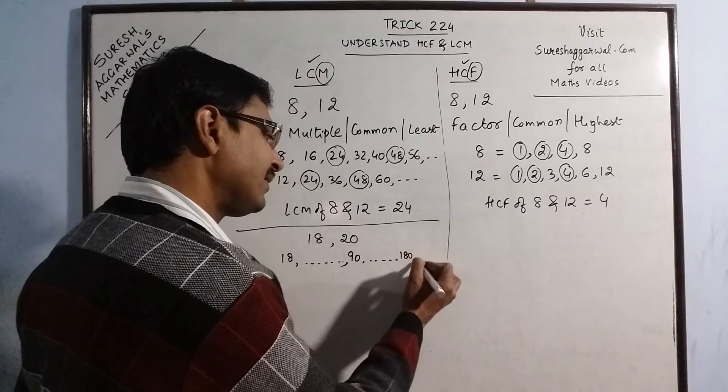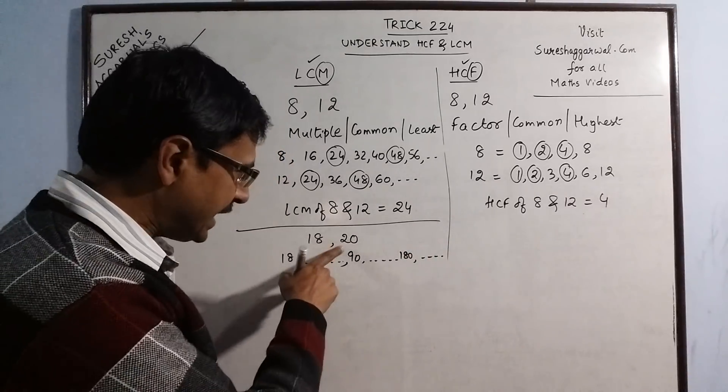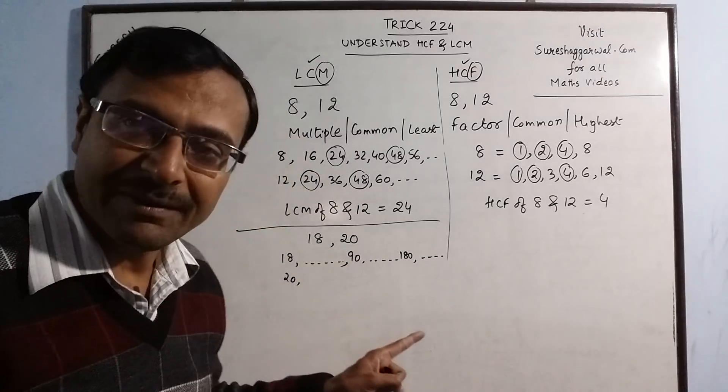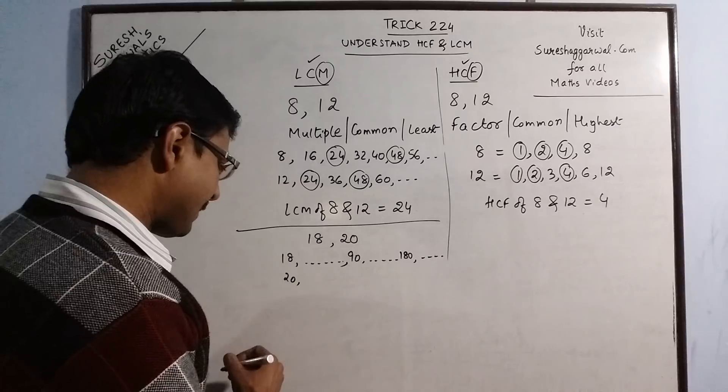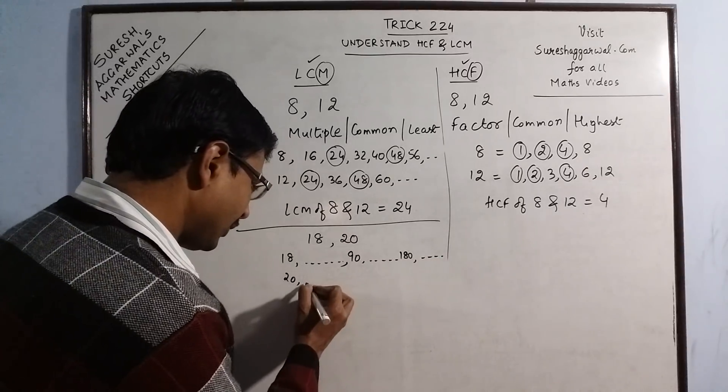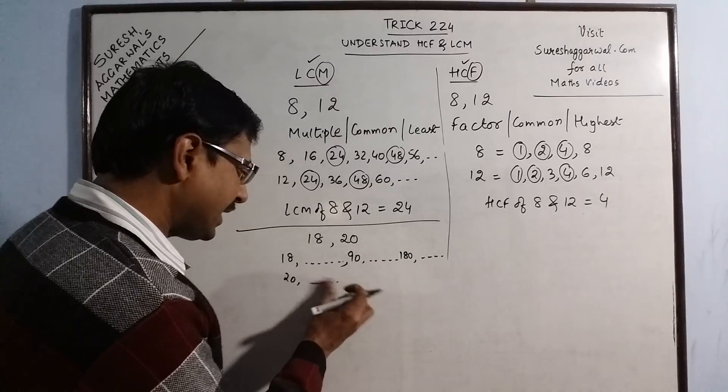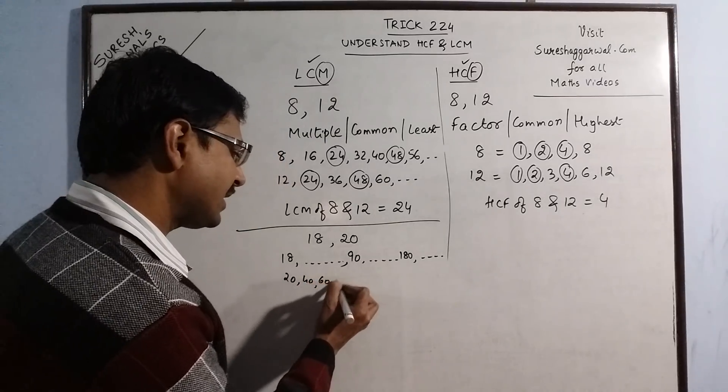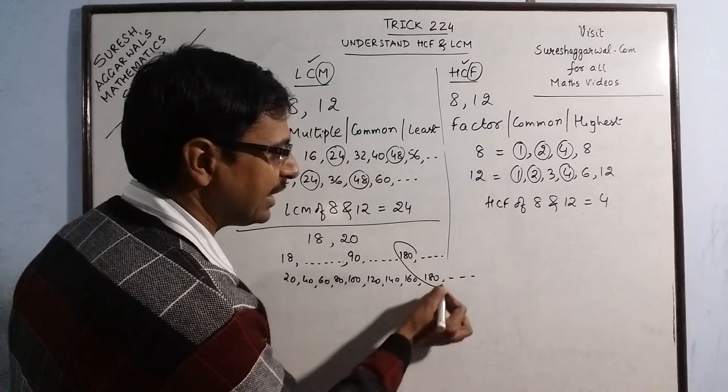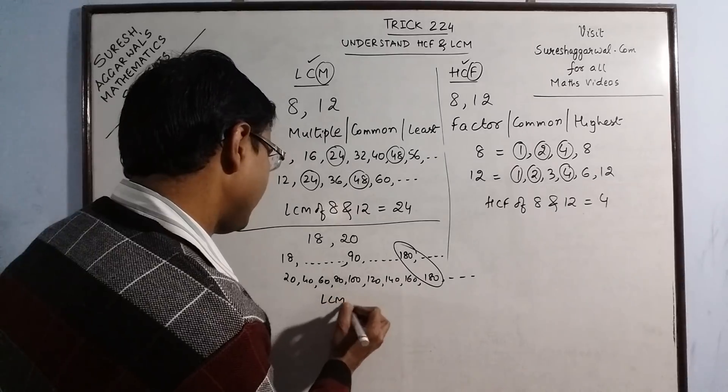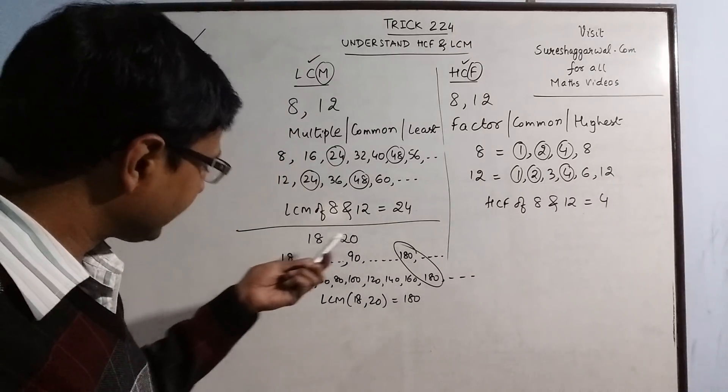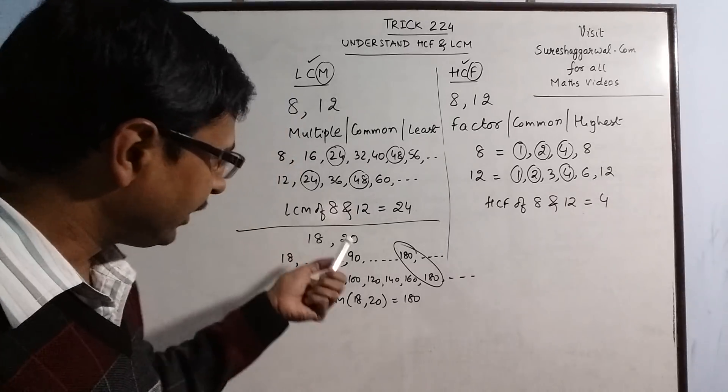So 18 5s are 90. Then you will not get any number which is having a 0 in the units place. 18 10s are 180. Because in 20, all the multiples will have 0 in the units place. So I need only those numbers which have a 0 in the units place. So 20, now after 20 I have 40, 60, 80 which cannot be common. So I have to write it up to 40, 60, 80, nothing is common. See 100, 120, 140, 160, nothing is common up to when I reach 180. So the LCM of 18 and 20 is 180. See, little bit of understanding and just by looking at the numbers 18 and 20, you can find the LCM.